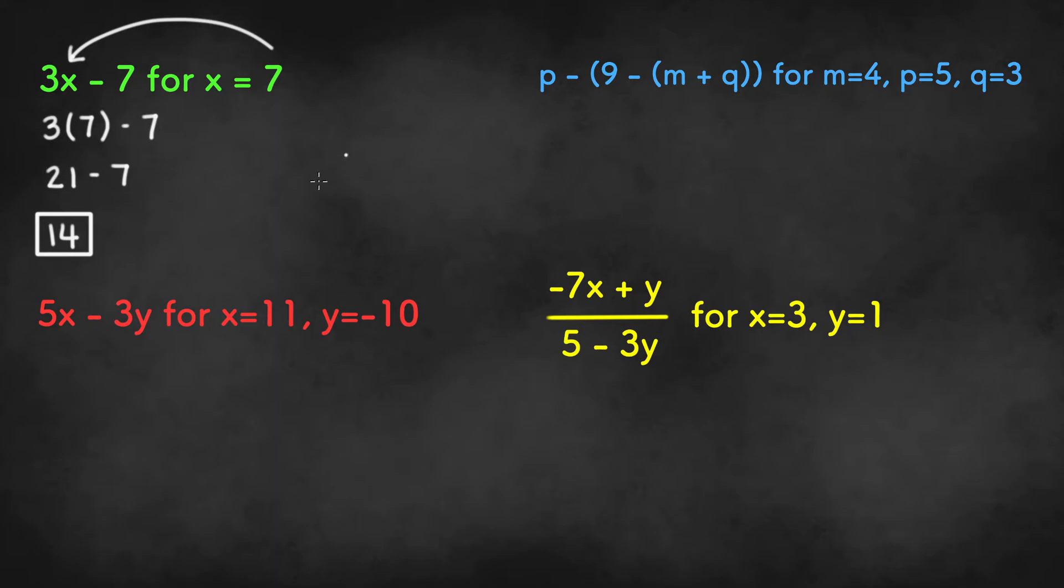The second example says 5x minus 3y for x is equal to 11 and y is equal to negative 10. So we need to plug in 11 for x and negative 10 for y. And we get 5 times 11 minus 3 times negative 10.